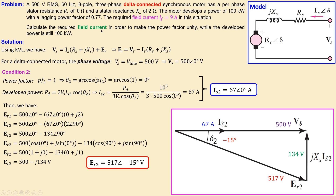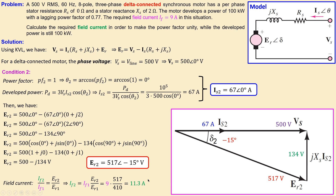To find the required field current for the new condition, we use the proportional relationship: the ratio of new field current to the original field current equals the ratio of the new back EMF to the original back EMF. Rewriting this and substituting the known values — the back EMFs of both conditions and the original field current of 9 amperes — we get a new field current of 11.3 amperes. So the field current increases from 9 amps to 11.3 amps, while the stator current decreases from 87 to 67 amps.